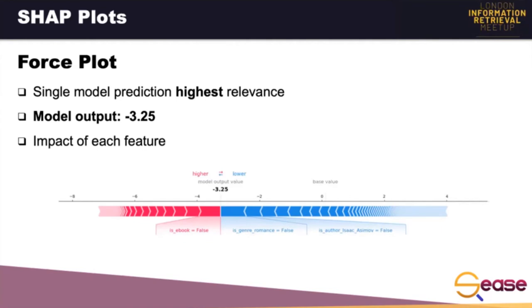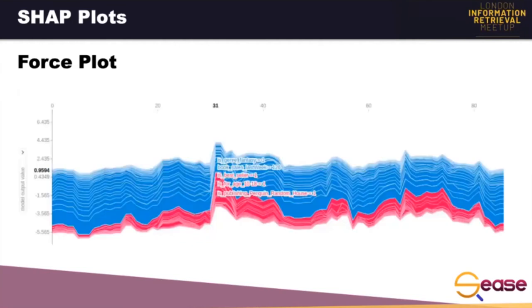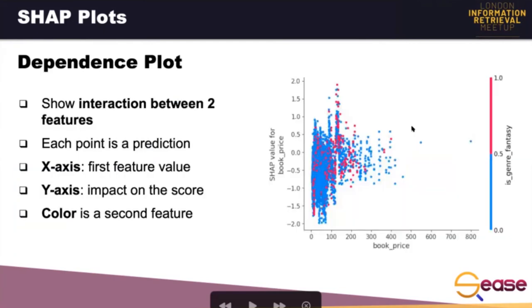The fact that the book doesn't have a romance genre and the author is not Isaac Asimov impacts negatively on the output, while not being an ebook impacts positively. If you want a global representation, you can use a variant of the force plot. Imagine taking the previous plot and placing it vertically — rotating it 90 degrees — and adding the force plots of all the other observations side by side. You get an interactive plot that you save in HTML format and can open using a browser. Positioning your mouse on it, you can highlight a specific row and check how the features are impacting the score. Then we have the dependence plot, which shows the marginal effect that two features have on the predicted outcome of a model.